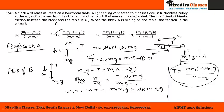To summarize: we drew the FBD for block A and block B, used those to get two equations, and by solving them we found T equals M1M2(1 + mu-k)g divided by (M1 + M2).